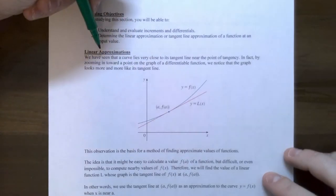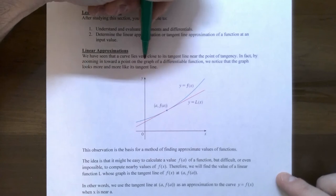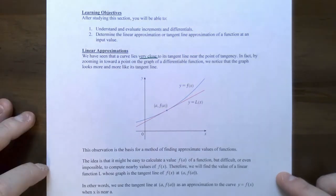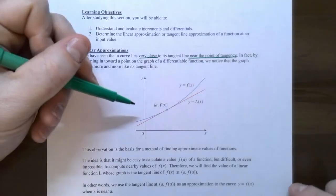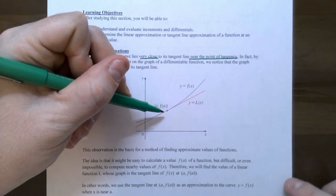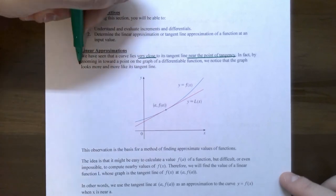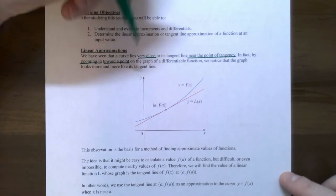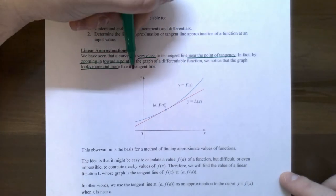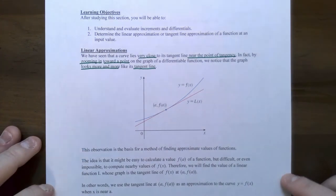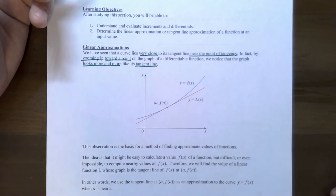So we're going to start with linear approximations. We have already seen that a curve that lies very close to its tangent line near a point looks like a straight line. So if you look at the graph and zoom in at x equals a, the graph y equals f of x is going to look like the tangent line. If you zoom in towards the point of tangency, your graph will look more and more like a tangent line at that point. This observation is the method behind approximating values of functions using a process called linearization.